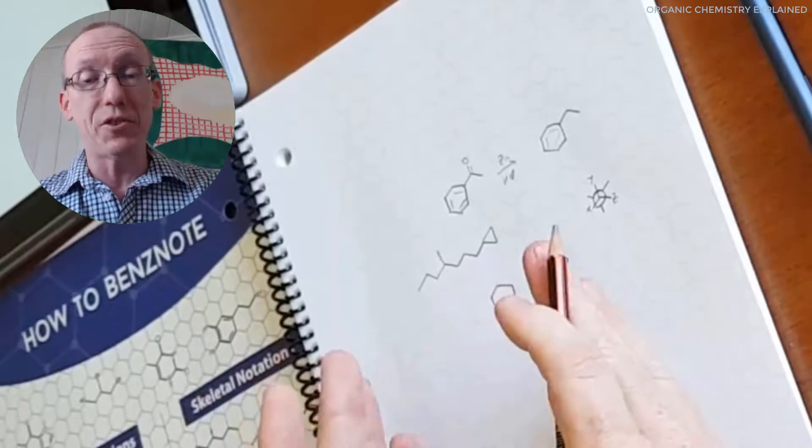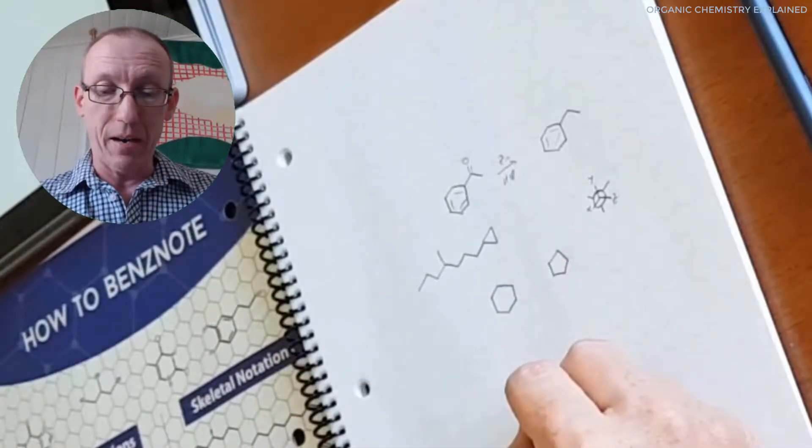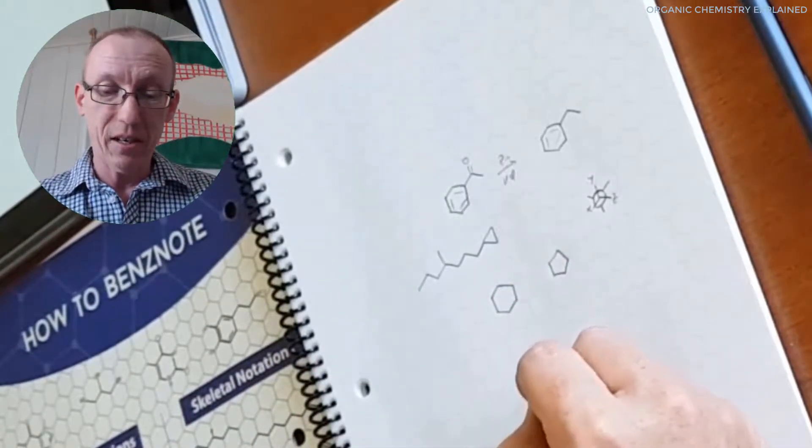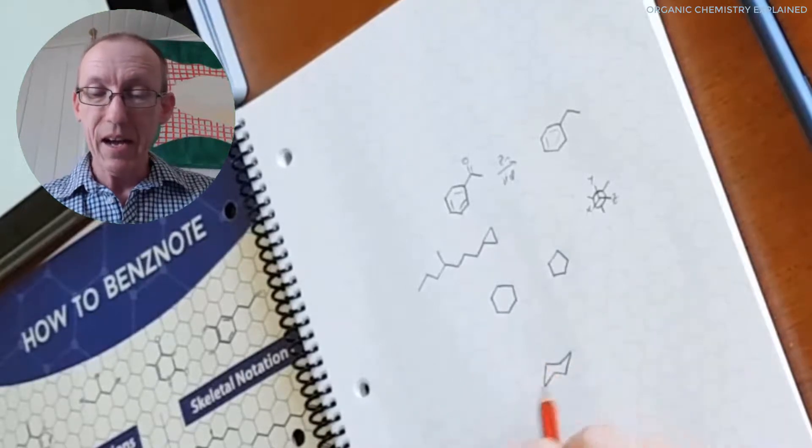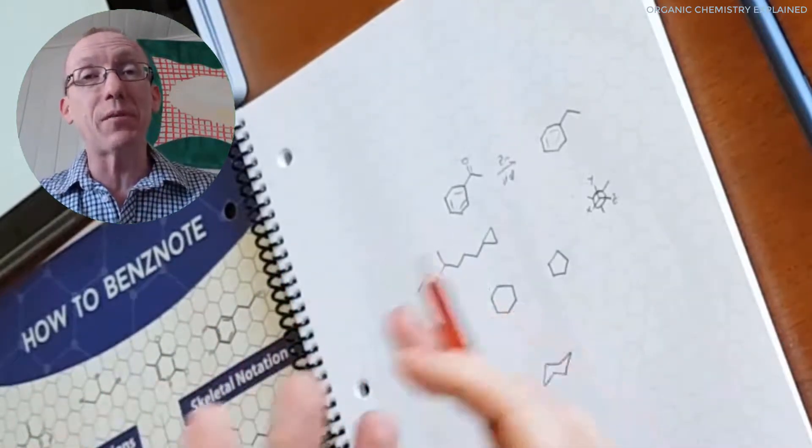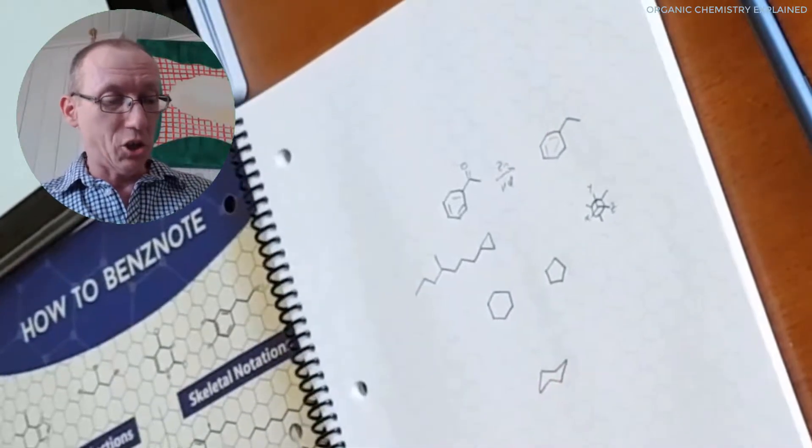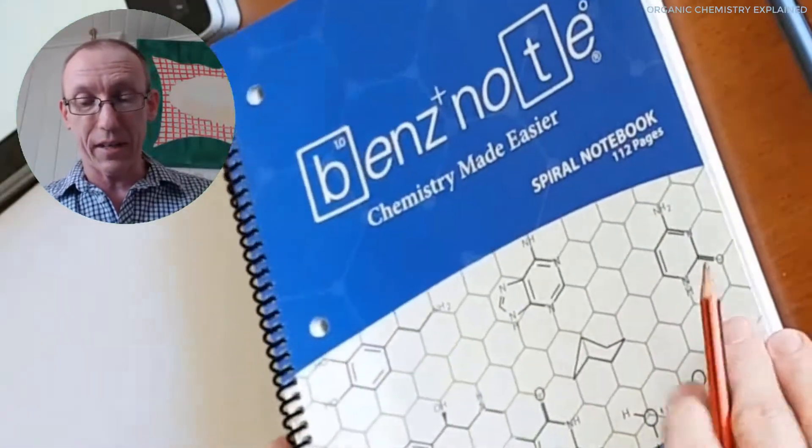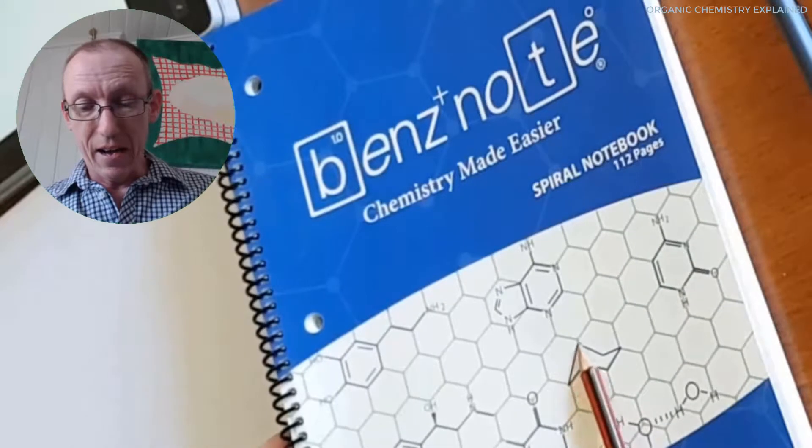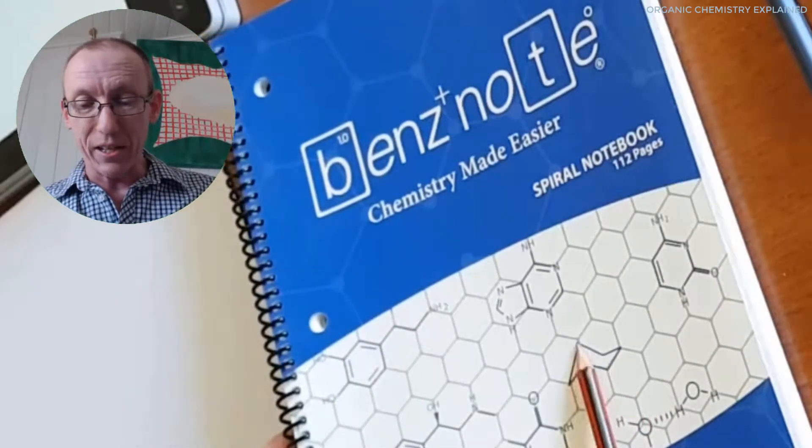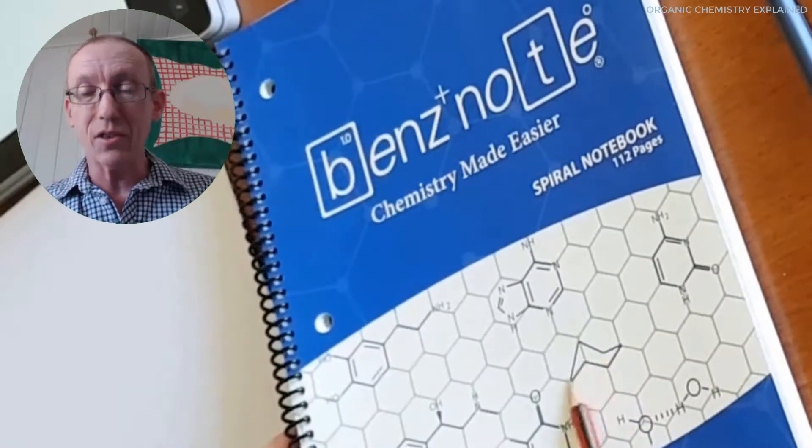But what I don't recommend you do is draw your cyclohexane chairs. So cyclohexane chair looks like this and that's not supposed to fit into a hexagonal template. And I must say I was, I was a bit shocked and a little bit disappointed to see on the front cover of Ben's note here, one of the exemplar structures being a chair cyclohexane.